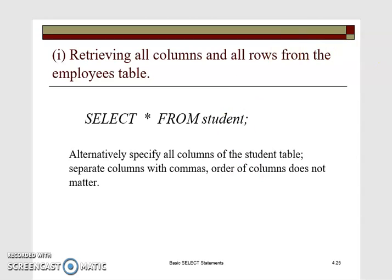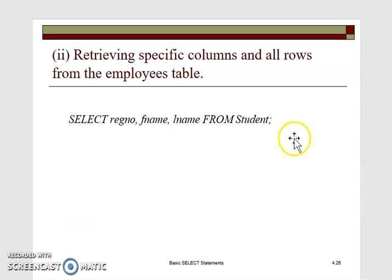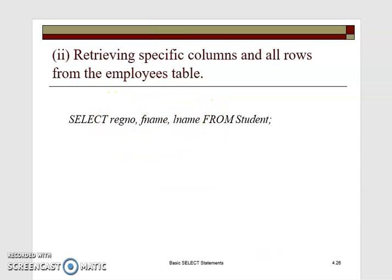For example, retrieving all columns and rows from the table uses SELECT * FROM student — everything in the student table will be displayed. To retrieve specific columns, you list only the columns you want. For instance, this table may have date of birth, programme code, and course code, but if you only want registration number, first name, and last name returned, you use that specific syntax.